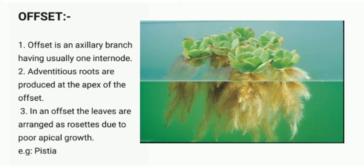Offset is an axillary branch having usually one internode. Adventitious or fibrous roots are produced at the apex of the offset. The leaves of the offset are arranged as rosettes due to poor apical growth. Pistia and Eichhornia are examples of offset. In the image you can see Pistia — it's looking pretty awesome.